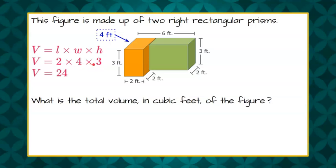Eight times three is 24. So we know that the volume of what I've made orange right here, this right rectangular prism is 24.